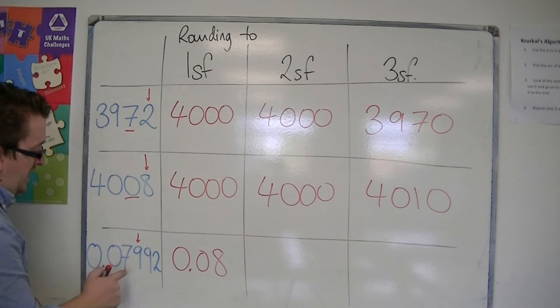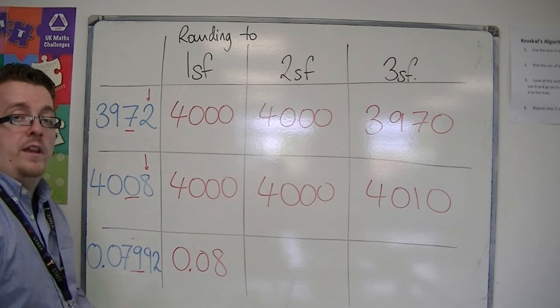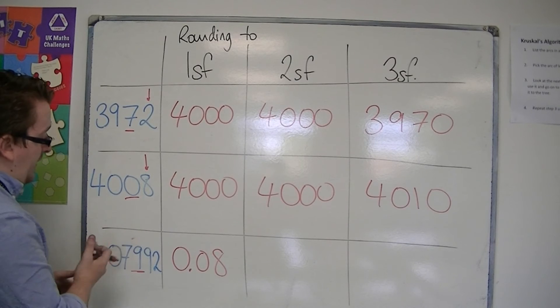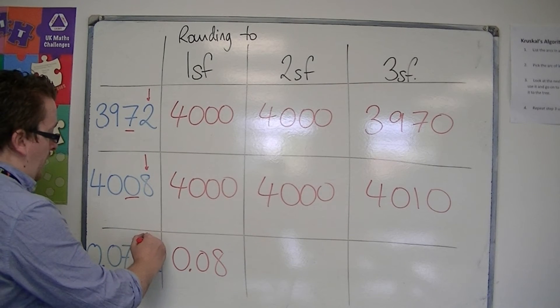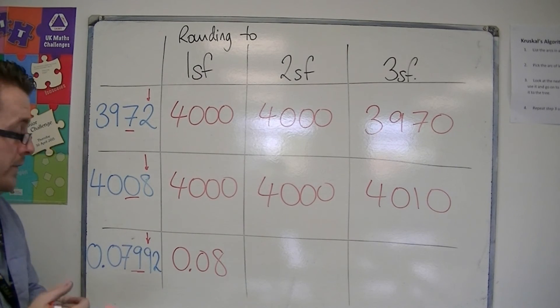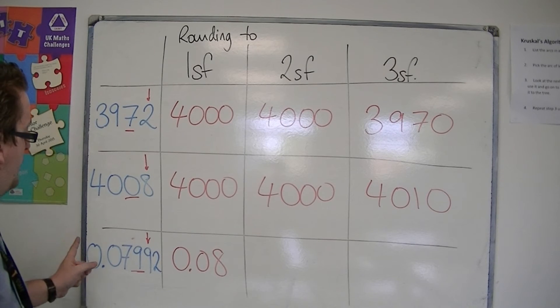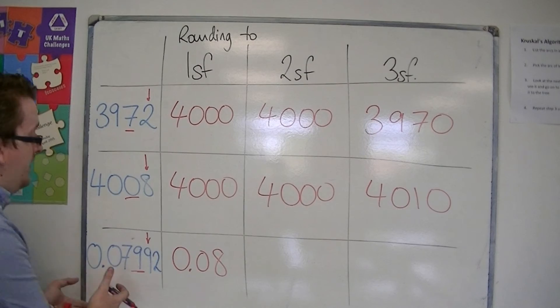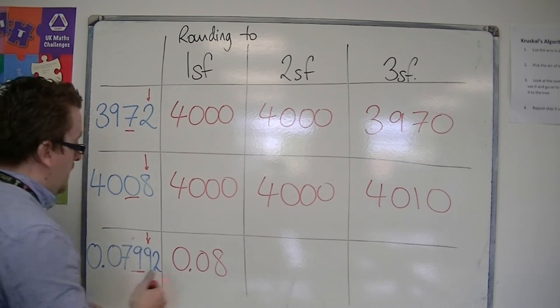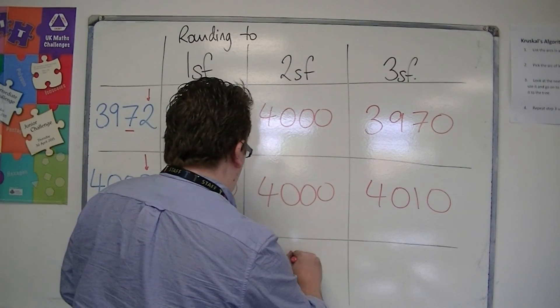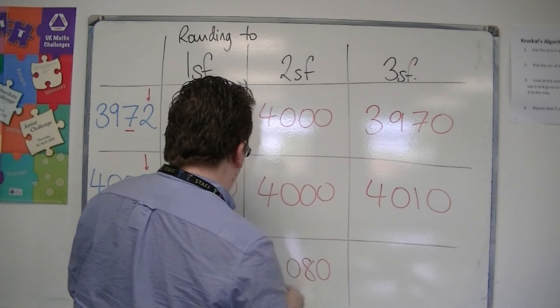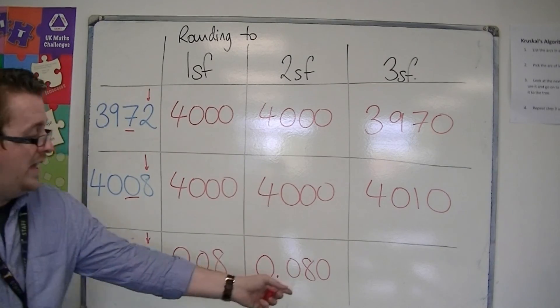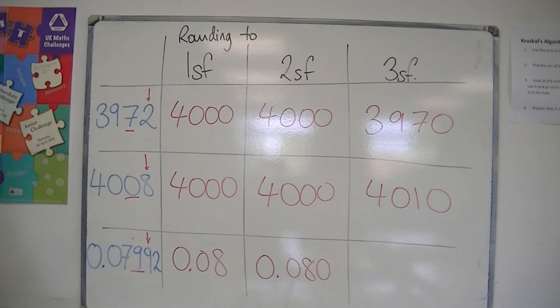To two significant figures, okay, we're looking at the 9 now. That's the second significant figure column. One to the right tells me to round up, so it would be to 0.080, because the 79 needs to round up to 80. So 0.080. And you must include that 0 there in order for it to be correct.